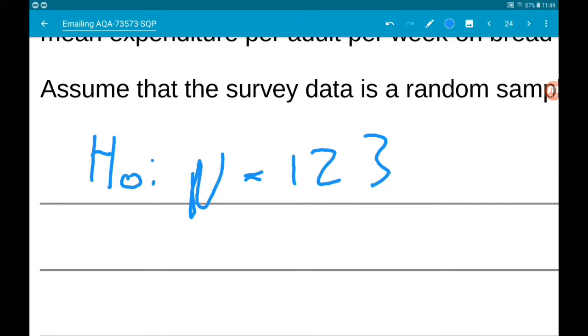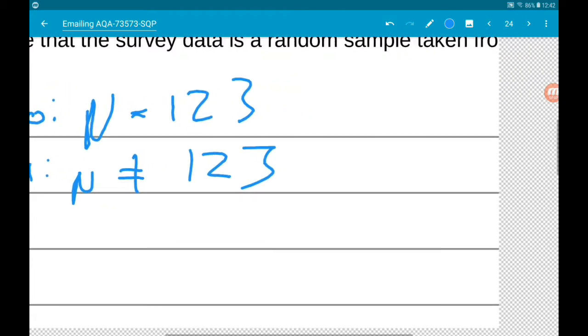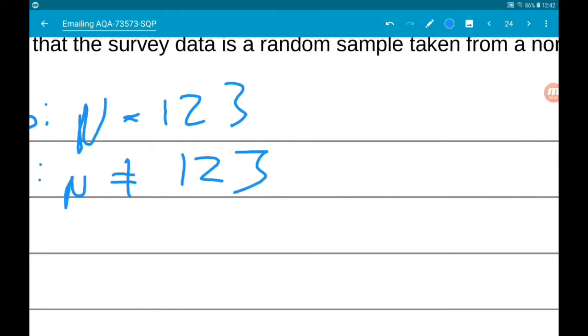Our alternative hypothesis then is that the mean didn't stay the same, it changed. So we're not asked whether it increased or decreased, just changed. So we want that mu is not equal to 123p. So because we're dealing with mu not equal to 123p, that makes this a two-tailed test.